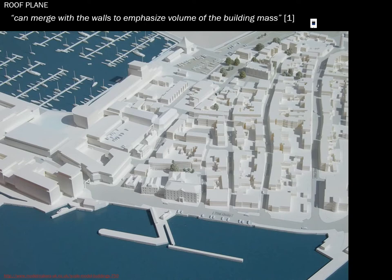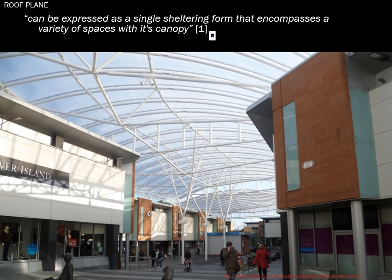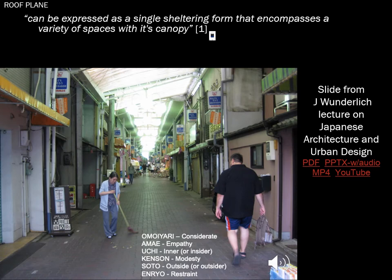The roof plane can be considered like a hat on a building that articulates the space underneath. It can be expressed as a single sheltered form encompassing a variety of spaces within the canopy. In Japan — specifically Kyoto where my son and I stayed for a couple of weeks — it's common to declare a street a shopping street, remove cars, put an overhead roof over it, and create essentially a mall. It works better than a separate shopping mall because it's already in the fabric of the community.